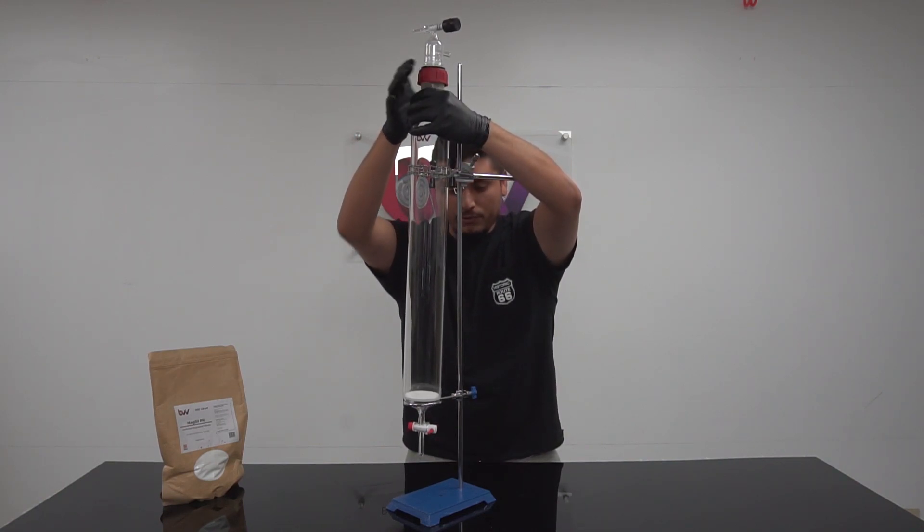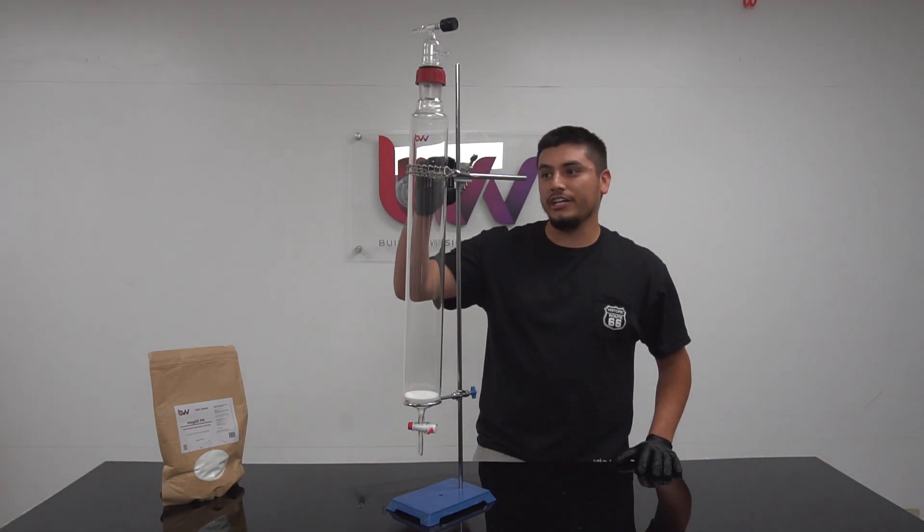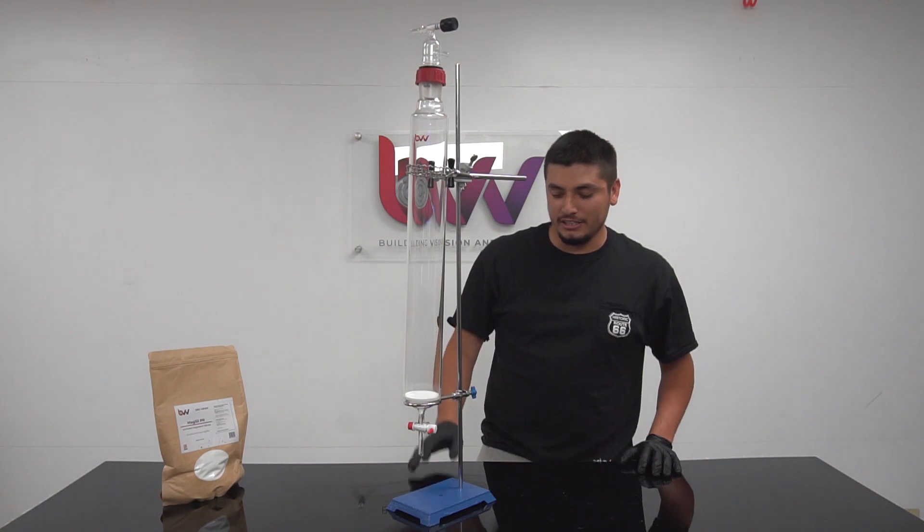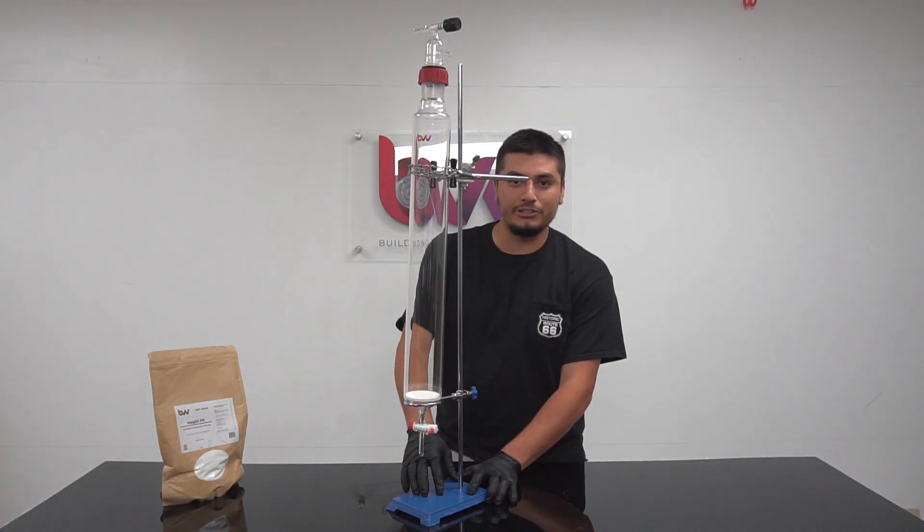Also coming with the kit will be our support ring and chain clamp. It features a 36 inch rod as well as a casted iron base for better support.